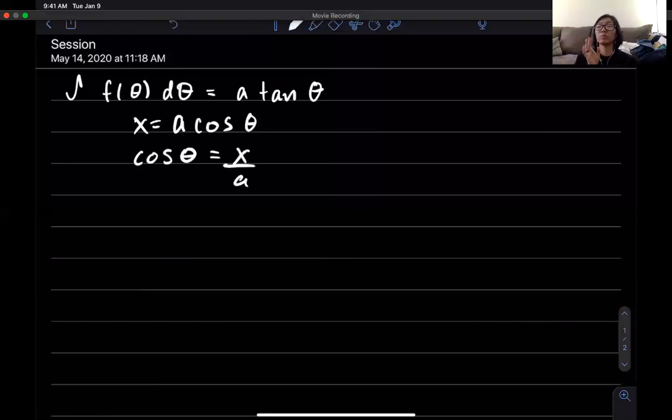And now we're in a pretty good spot to draw a right triangle and be like okay which sides are cosine right.